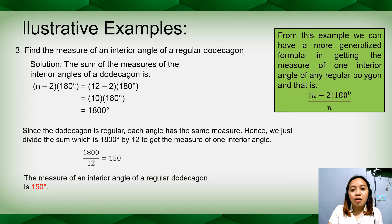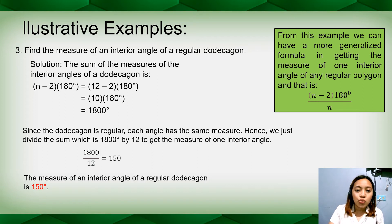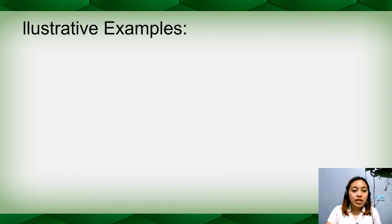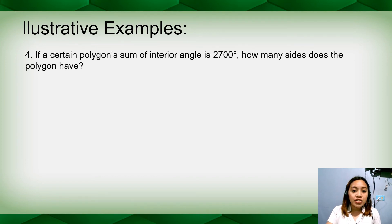From this example we can derive a more generalized formula for the measure of one interior angle of any regular polygon: (n − 2) × 180 divided by n. This is applicable for a regular polygon. Example number four: if a certain polygon has a sum of interior angles of 2,700 degrees, how many sides does the polygon have? The given is the sum of interior angles: 2,700 degrees. The unknown is the number of sides, n.